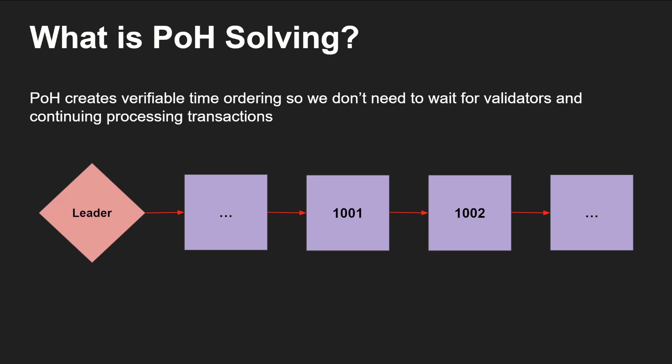So how does proof of history solve this? Proof of history creates a verifiable time ordering, so we don't actually need to wait for the validators and can just continue processing transactions. The leader generates blocks — block 1001, 1002, and so on. Because we have this number ordering or time ordering, all validator nodes know the order of the blocks even if they received them in an incorrect order. The benefit of not having to wait is that we don't have to pay as high a gas fee as with Ethereum or Bitcoin. And because we don't have any self-imposed timeouts, Solana can process as many transactions as it can physically compute, giving us the high transactions per second that Solana is known for.